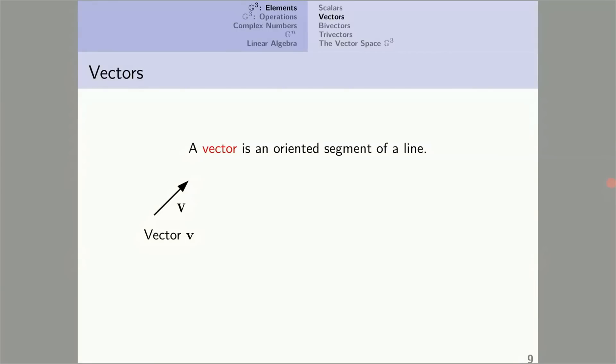Vectors. A vector is an oriented segment of a line. You see one illustrated. A vector has a size, its length, and it has an orientation given by an arrowhead at one of the two ends of the line segment. A vector is considered unchanged if it's moved parallel to itself. Note that vectors are one-dimensional objects. They may live in three dimensions, but they themselves are one-dimensional.